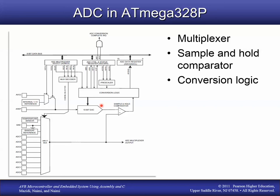We also have the sample-and-hold comparator. The conversion process used in our microcontroller is called successive approximations, and it takes anywhere from 13 to 25 clock cycles of the ADC clock, which is different from the machine clock. Since the conversion takes a finite amount of time, we use a sample-and-hold to sample the voltage and hold it during the successive approximation procedure, so the voltage being converted isn't changing. We sort of take a snapshot of the voltage, then compare it through successive approximations.